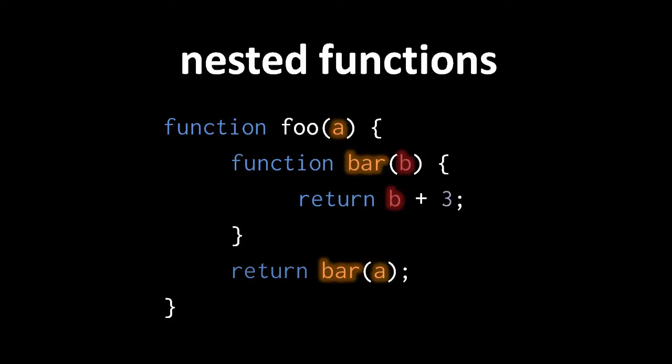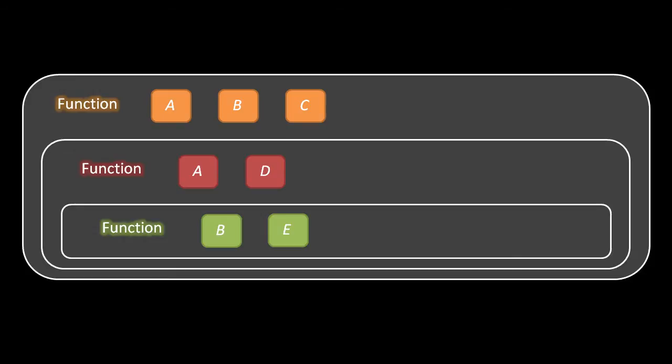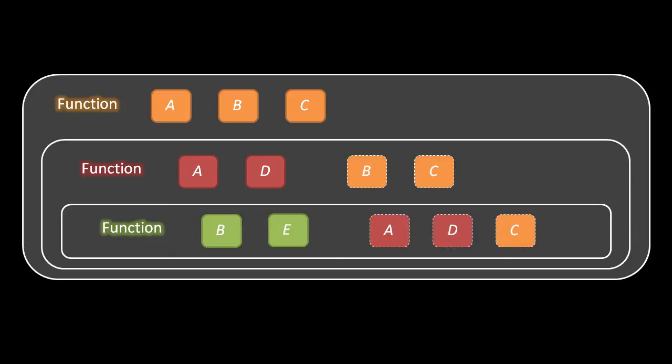Function nesting may go deeper than one level. For example, say in some call to a function we'll call orange, we create another function we'll call red, and in a call to that function we create another function we'll call green. The orange function has three variables named a, b, and c; the red function has two variables named a and d; and the green function has two variables b and e. Each copy of the red function can use the variables of the call to orange in which it was created, and each copy of the green function can use those variables as well, plus the variables of the call to the red function in which that copy was created.